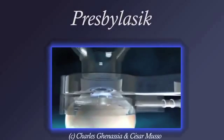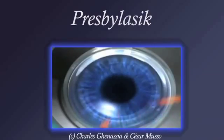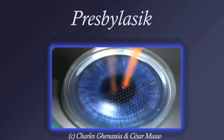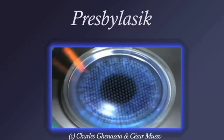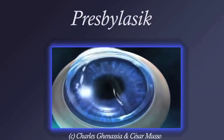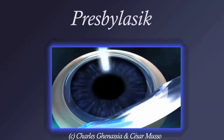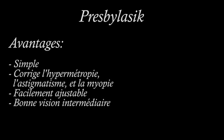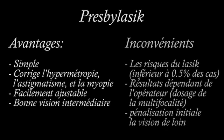Presbyopic LASIK is slightly more complex than IntraCor but can be applied to many more cases. In fact, presbyopic LASIK can combine the correction of associated myopia, hyperopia, or astigmatism. The procedure starts with the cutting of a flap using the femtosecond laser. The flap is lifted and then the excimer laser reshapes the periphery of the cornea to enhance its central curvature. This steepening corrects presbyopia in the center of the pupil. The advantages include correction of associated refractive errors, easy adjustability, and very good intermediate vision. Drawbacks include adverse effects associated with LASIK and results that depend on the experience of the surgeon.